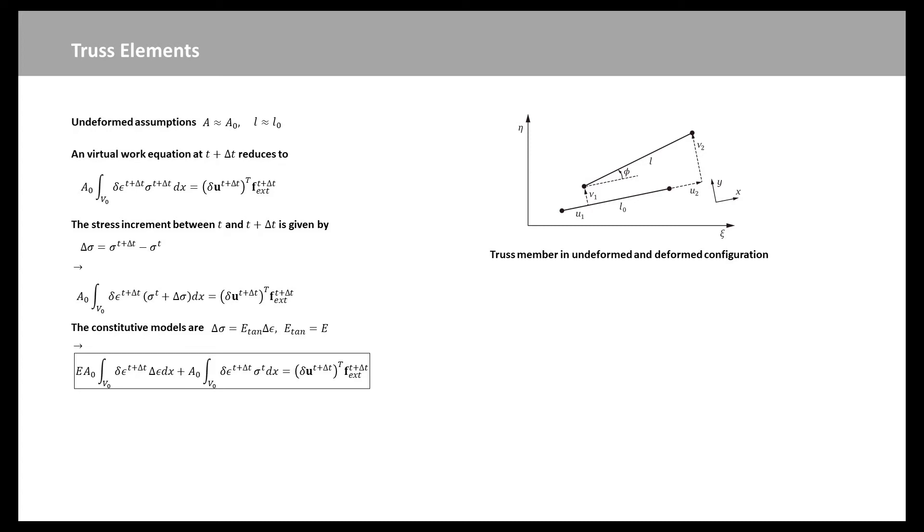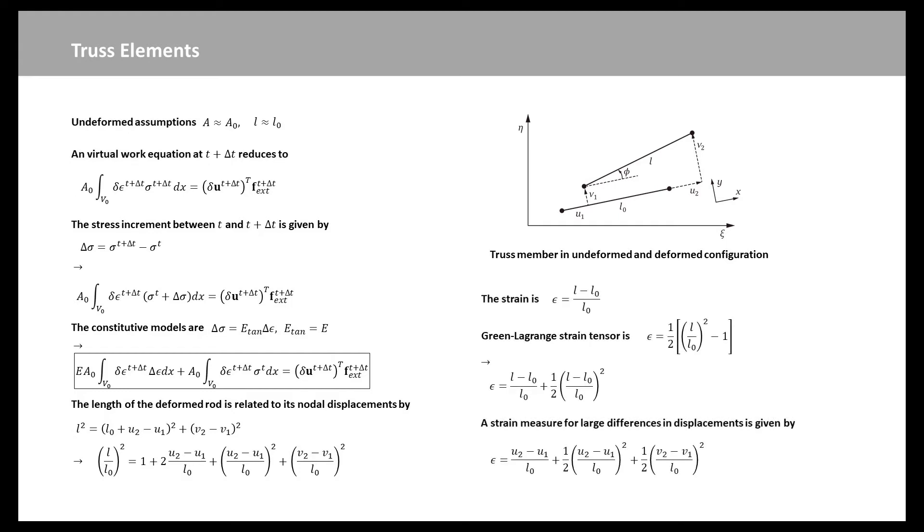Combination of the last two equations yield one equation. We now set out to derive a proper relationship between the displacement of the truss member and the strain epsilon. The length of the deformed rod is related to its nodal displacement by this equation. Dividing by L0 squared and expanding the right hand side, we obtain a new expression.